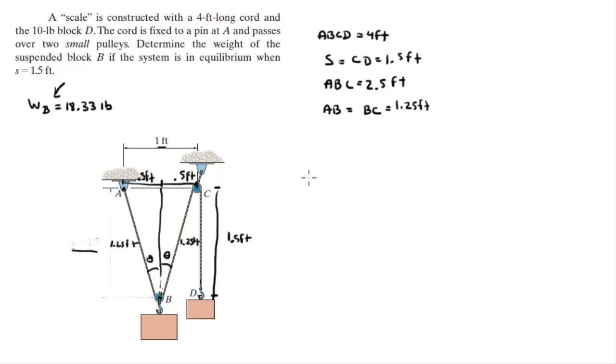So it's easy to find theta. You know that sine of theta is equal to opposite over hypotenuse. So that would be 0.5 over 1.25. So theta is simply the sine inverse of 0.5 over 1.25, and it comes out to be 23.6 degrees.